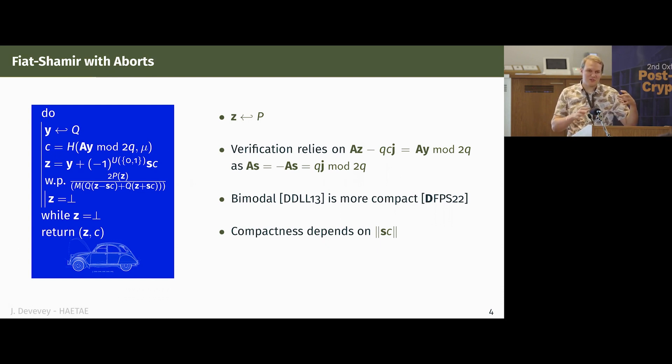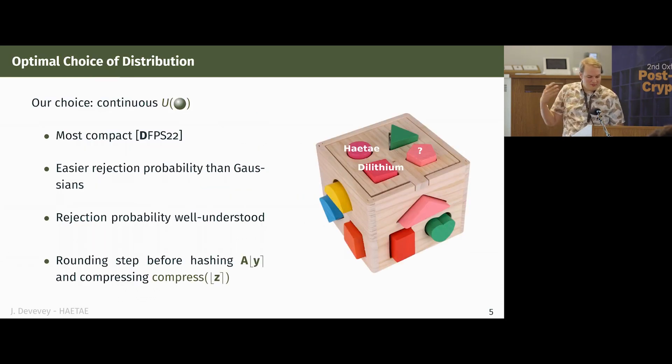So this bimodal setting is actually a generalization of BLISS, if that speaks to some people in the audience. And we've shown that this setting could lead to more compact signatures than the unimodal setting from Dilithium, hence why we went for that specific setting. And something that you should try to remind for the rest of this talk is that the compactness of the scheme is driven by how good you can control the norm of s times c, because if you have centers that are already close to zero, it's easier to erase them than some that are far away.